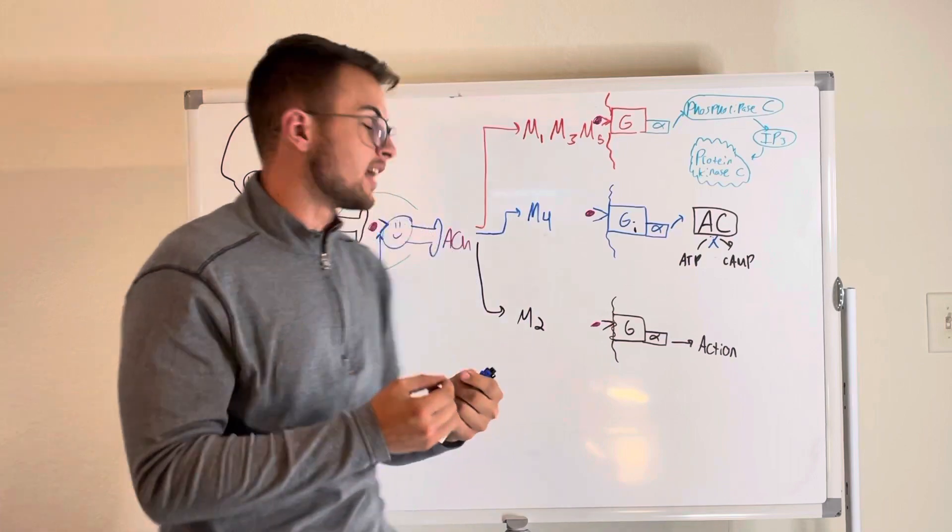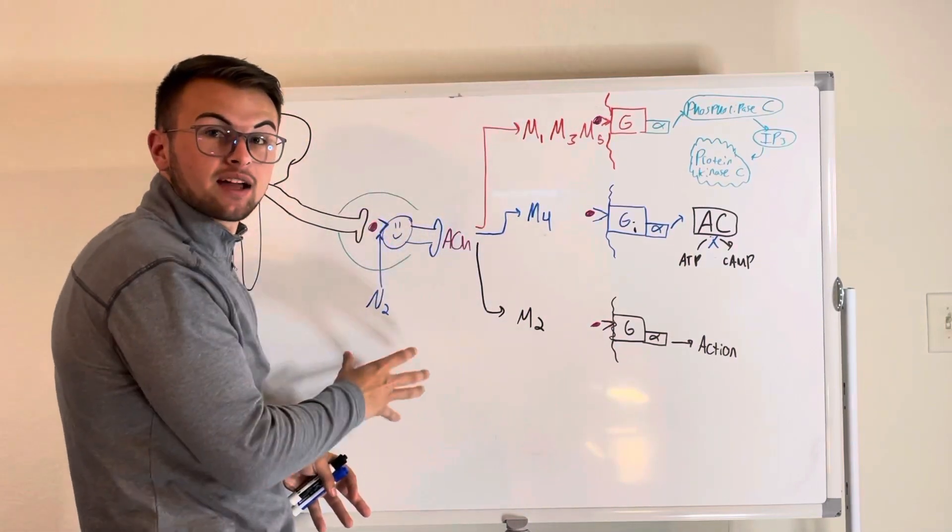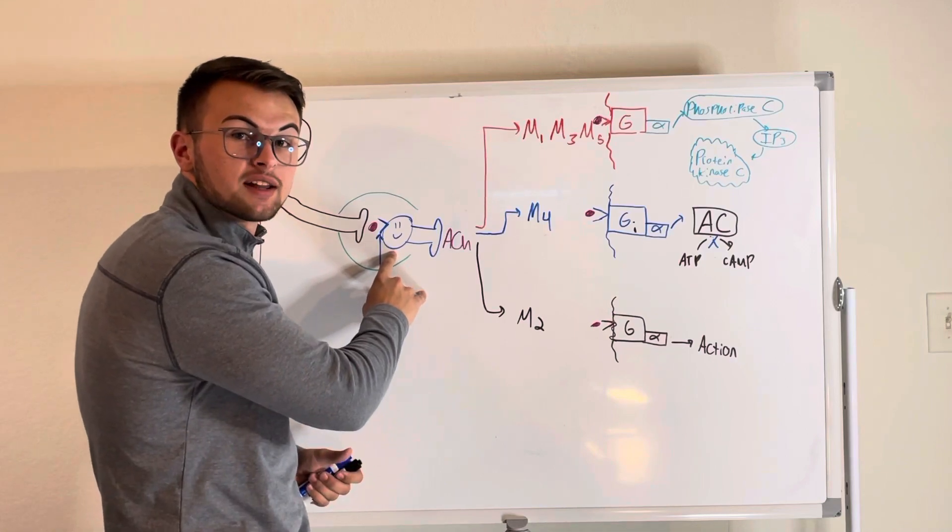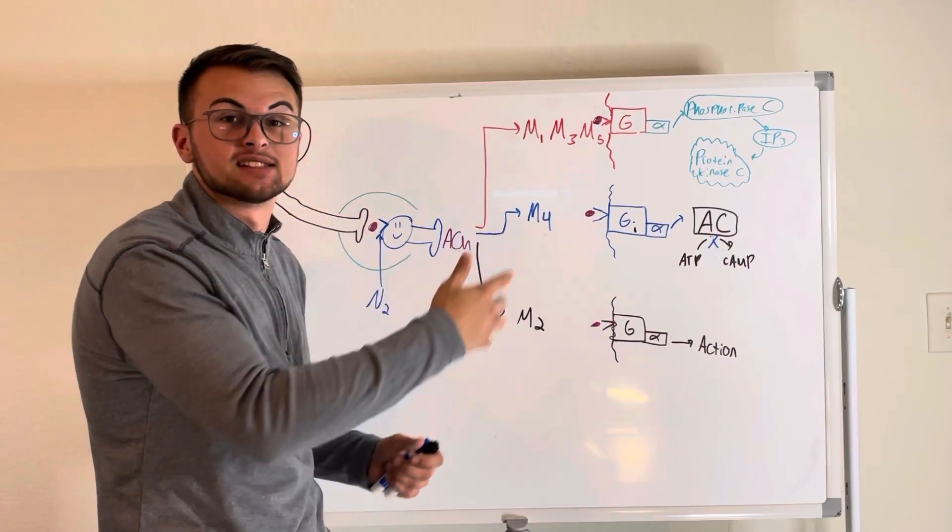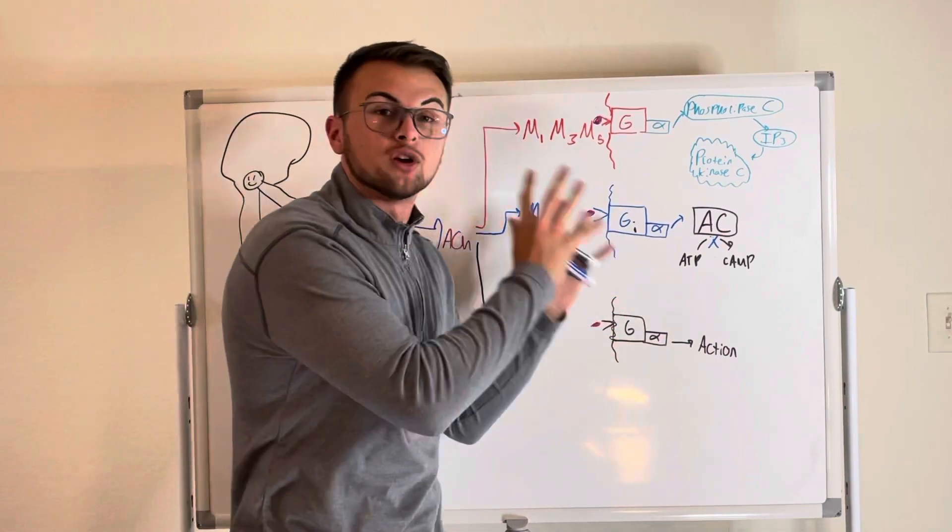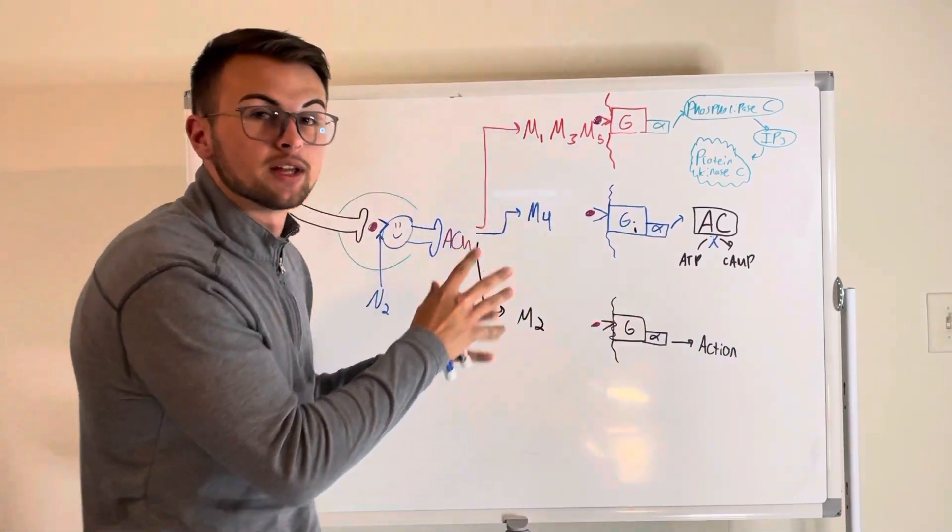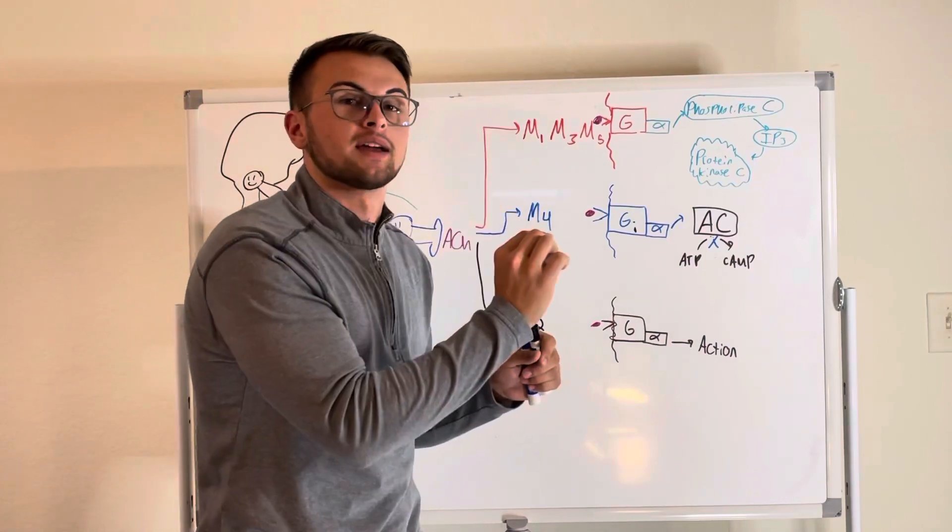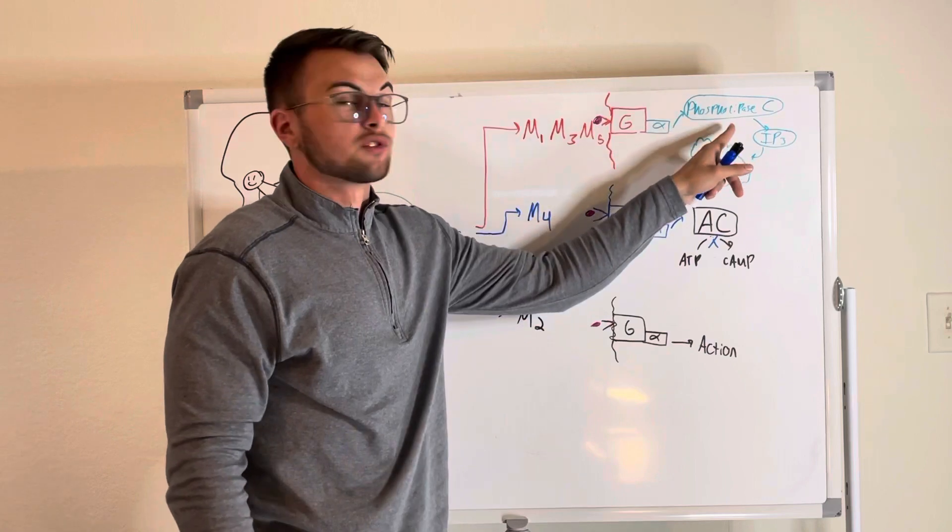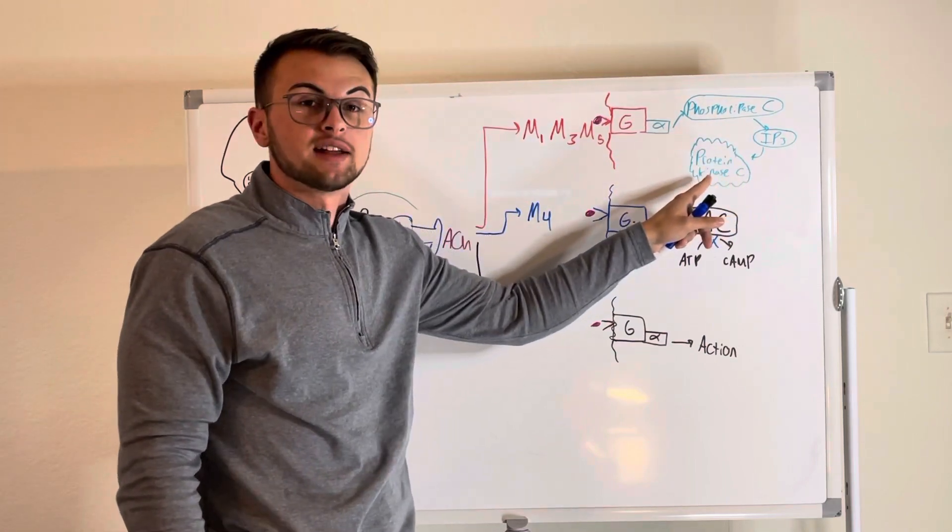N2 receptors are located in all of the autonomic ganglia, specifically on the post-ganglionic cell bodies of our parasympathetic and sympathetic neurons. And then lastly, we know that muscarinic receptors are activated by acetylcholine, but they're grouped together by their mechanism of action. So M135 uses the phospholipase C, IP3, protein kinase C pathway.